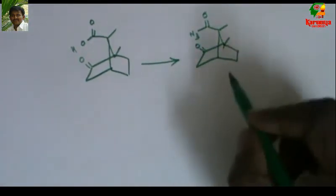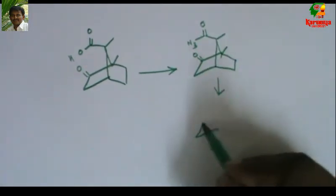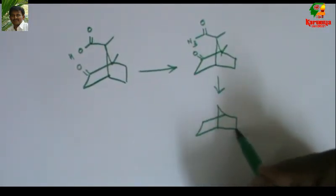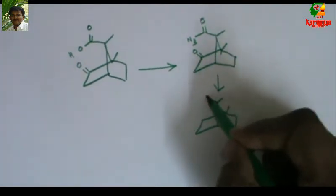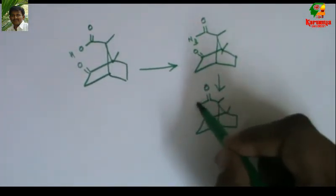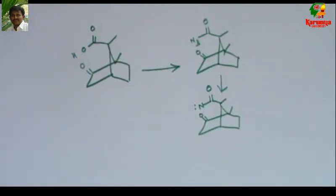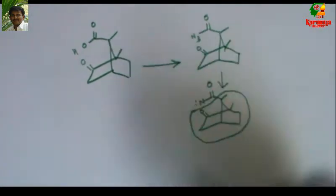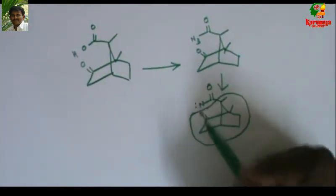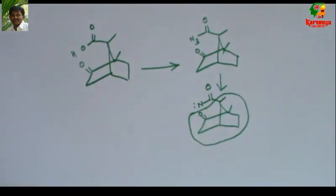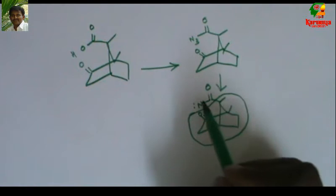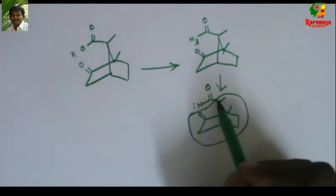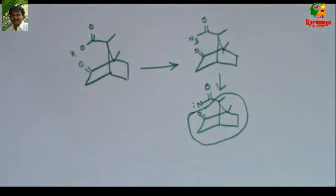This acyl azide decomposes to give the nitrene intermediate. Like this. Now this whole group is migrating here to give isocyanate. It may be difficult for you to visualize. It is very simple - just put the nitrogen on this carbon and you will get that.